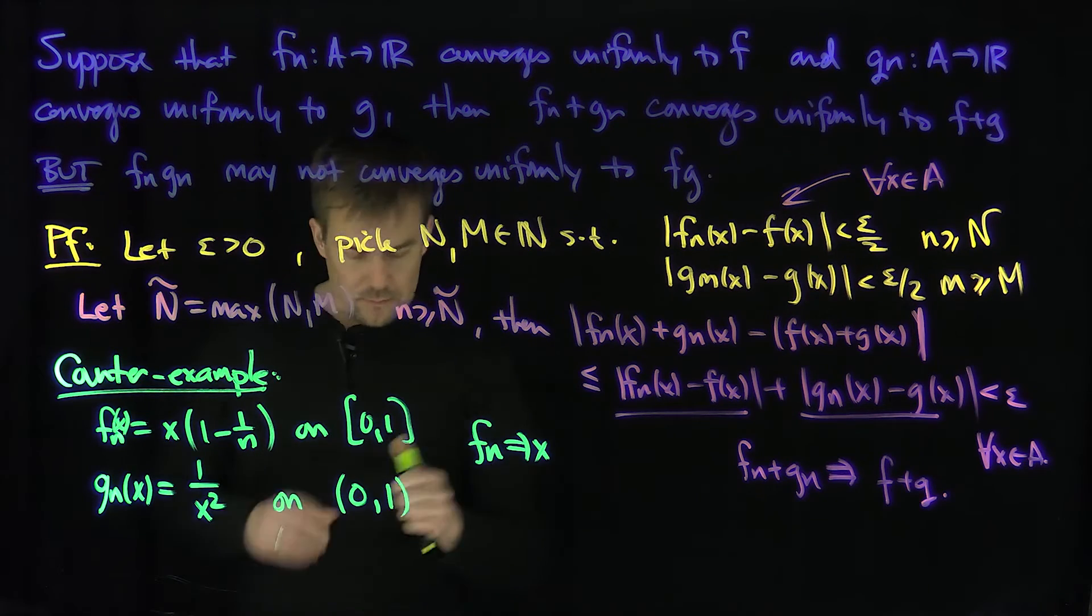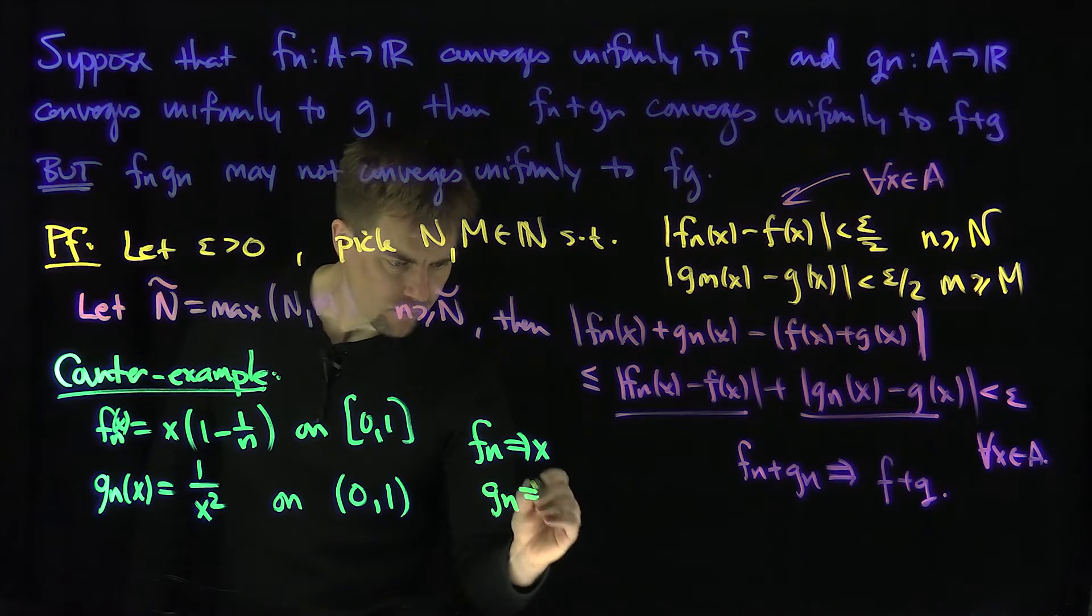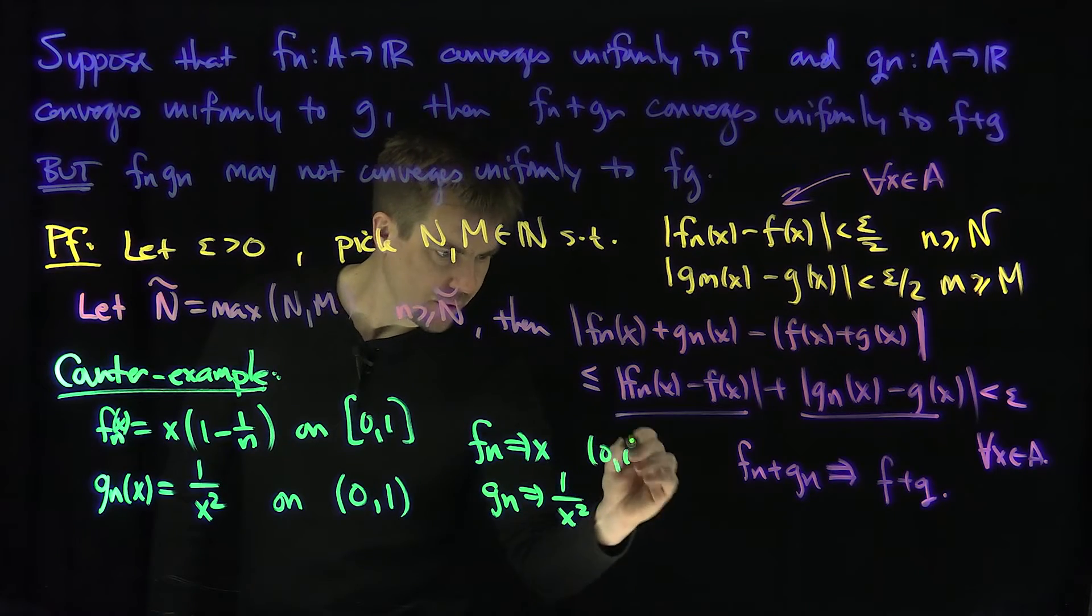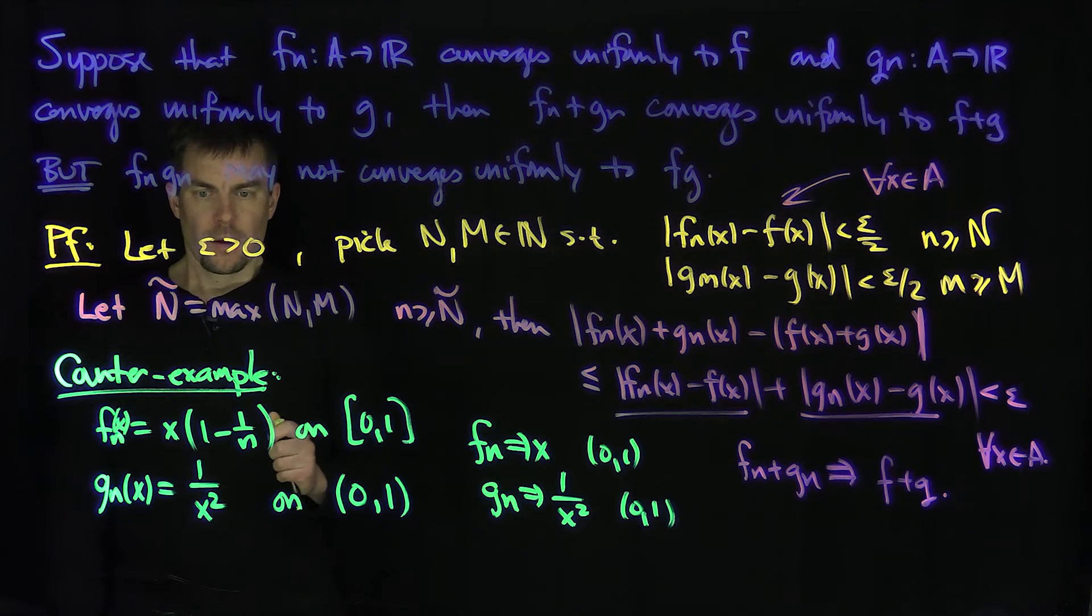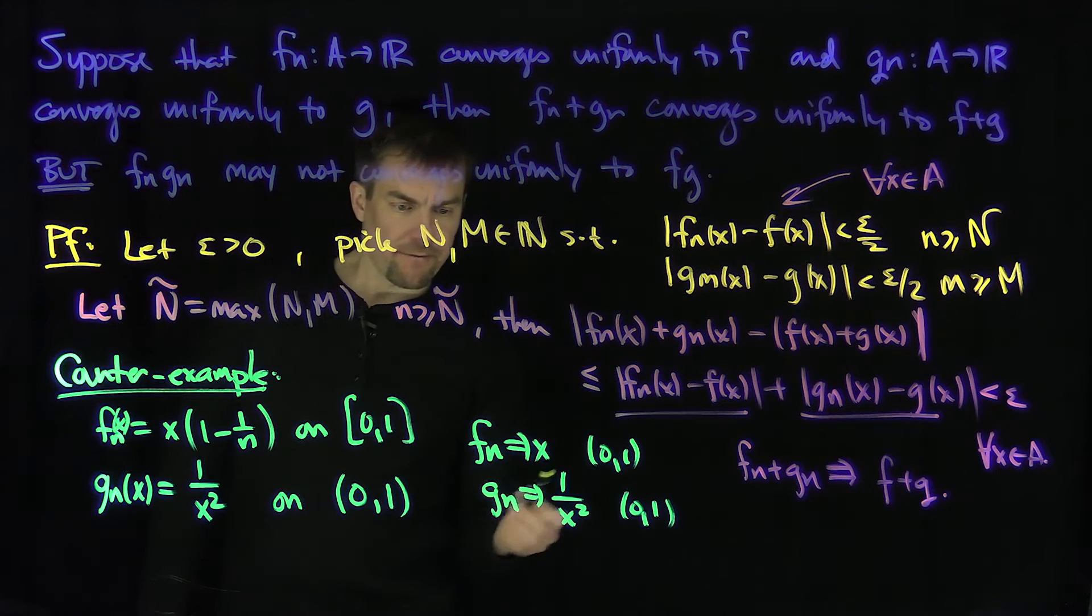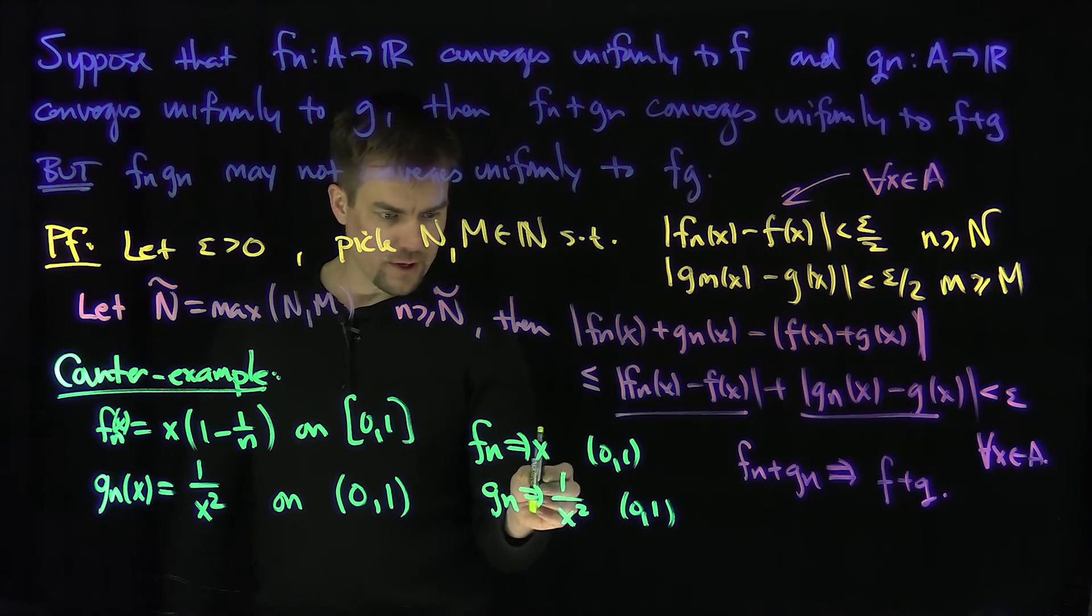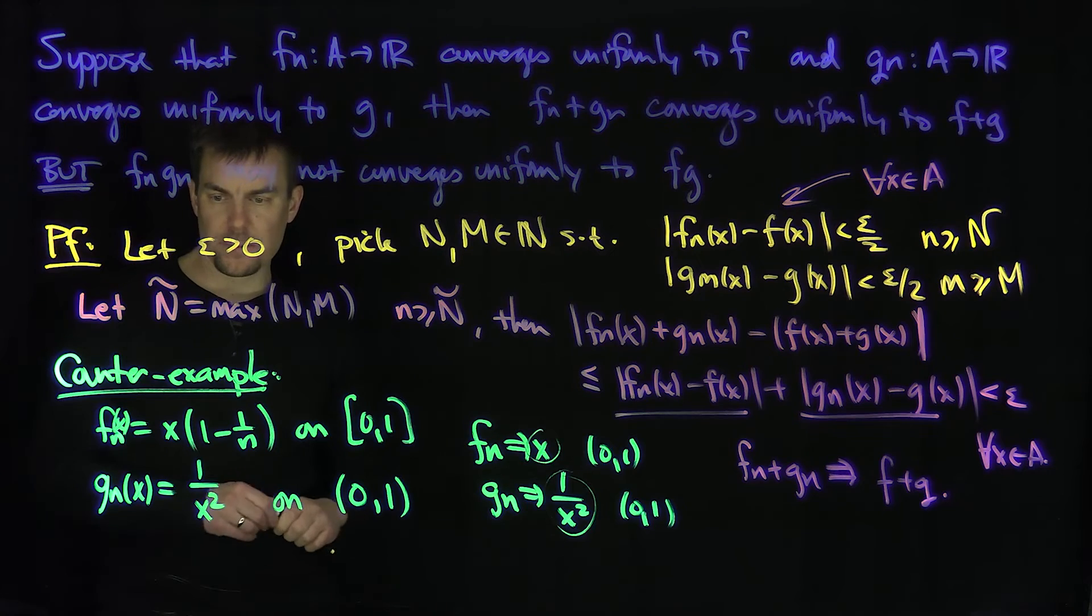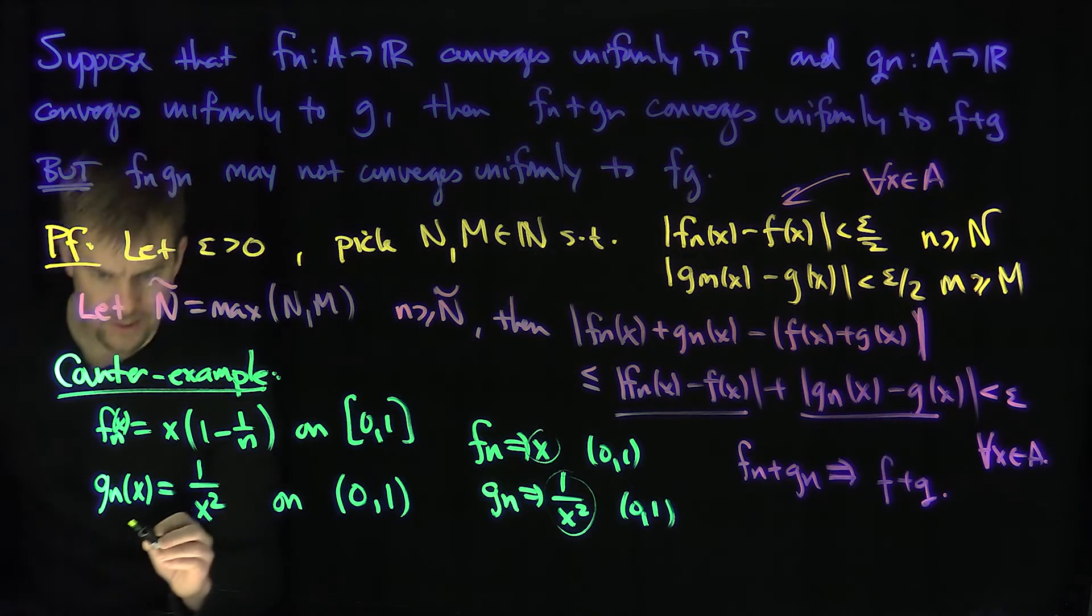Now Gn converges uniformly to 1 over x squared on (0,1). But the question becomes: does Fn times Gn converge to 1 over x? So let's look at Fn(x) times Gn(x).